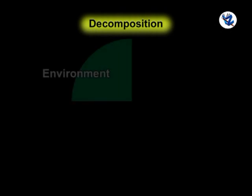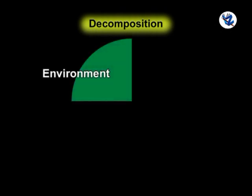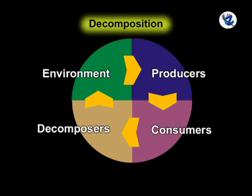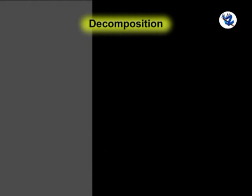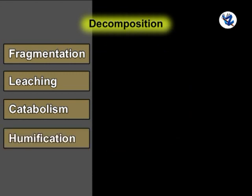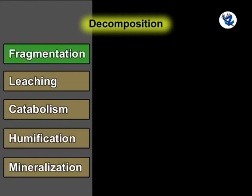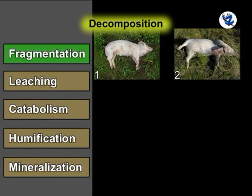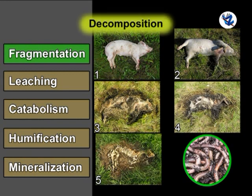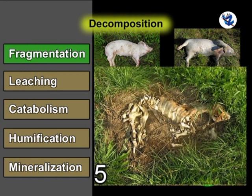For the stability of an ecosystem, as the production of organic matter is important, its consumption and finally decomposition are also equally important. The important steps in decomposition are fragmentation, leaching, catabolism, humification, and mineralization. It takes place through the detritus food chain, which starts from dead organic matter. Detritivores like earthworms break down the detritus into smaller particles, which is known as fragmentation.